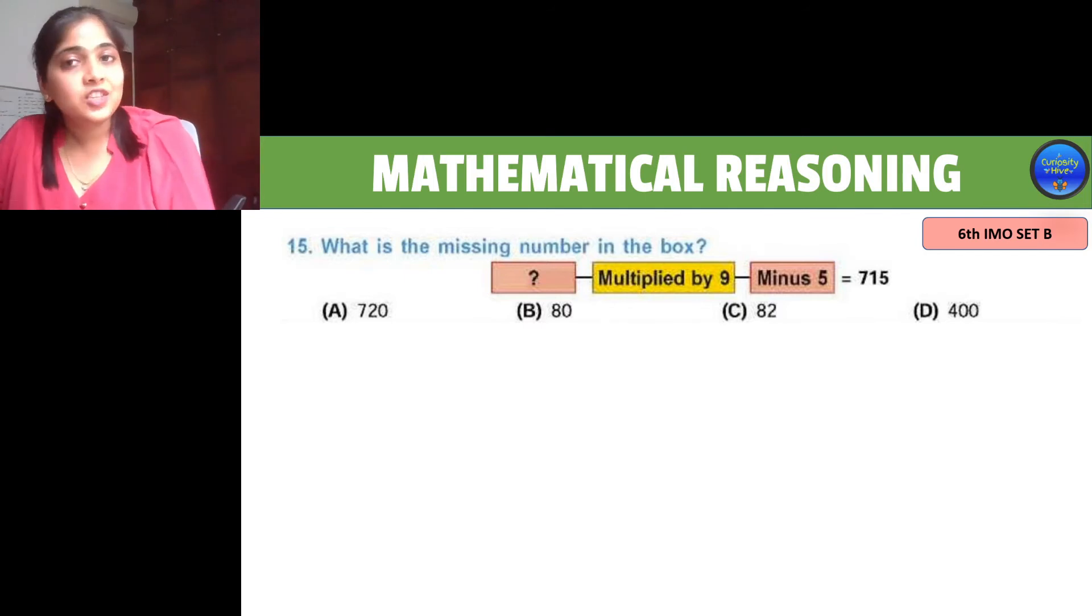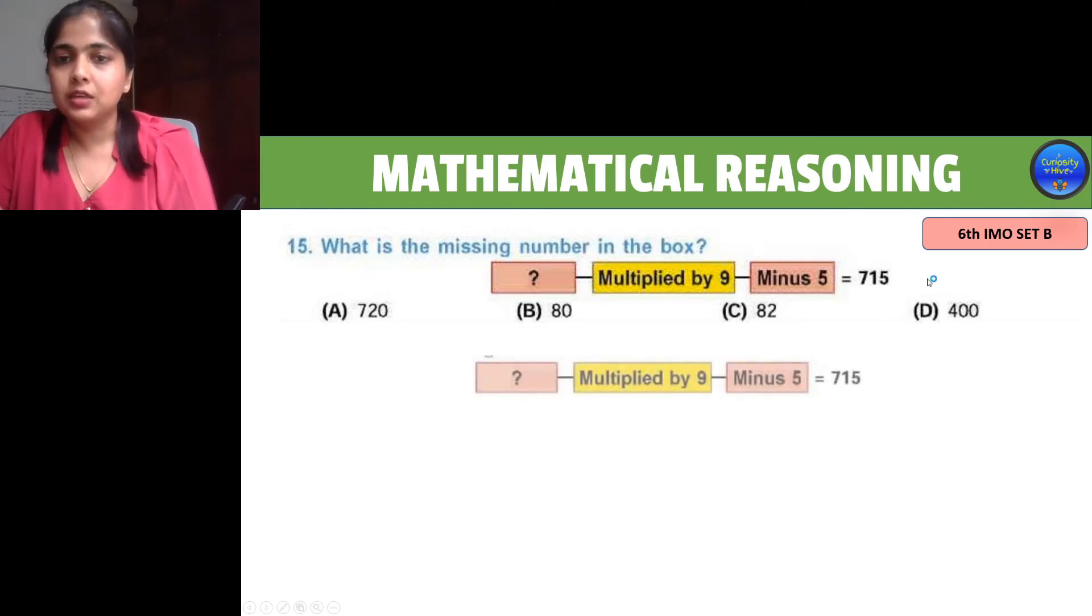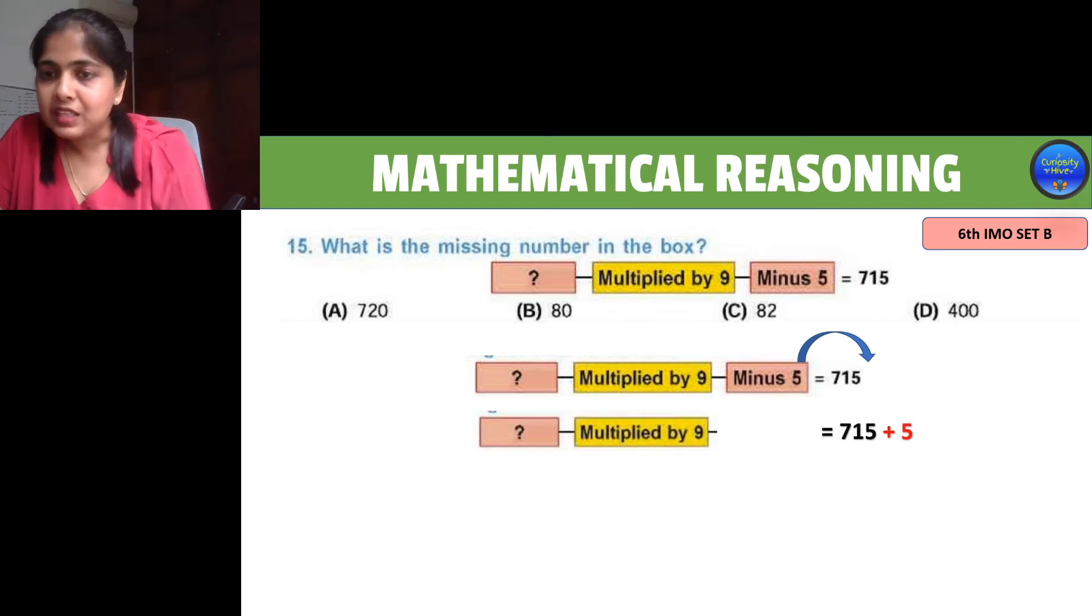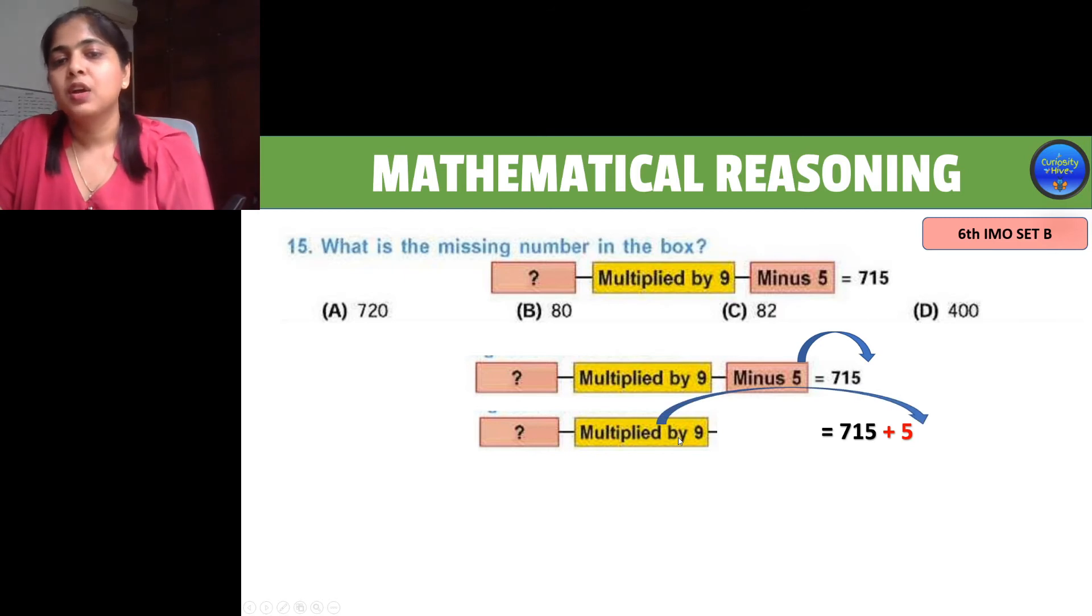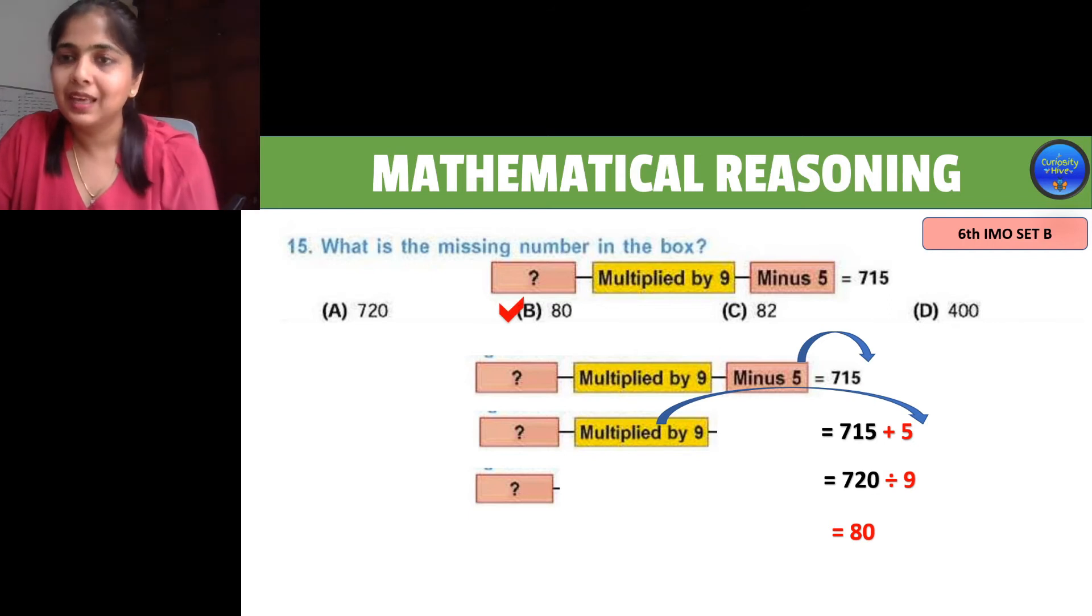A while back I mentioned moving the unknowns or knowns from one side of the equation to the other. When minus 5 needs to be moved to the other side, it becomes plus 5. An unknown multiplied by 9 equals 715 plus 5. Multiplied by 9 will move to the other side making it divided by 9. So your final answer is 720 divided by 9, which equals 80. Option B is correct. Remember this tip; it will be useful as you move ahead.